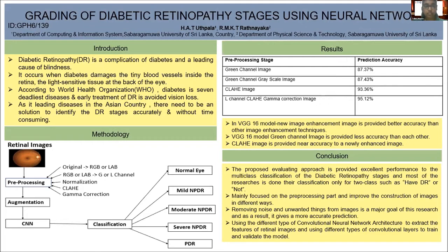Then a normalization process is applied to the images, followed by Contrast Limited Adaptive Histogram Equalization (CLAHE) to extract image features, and gamma correction to obtain tonal data from the original images. An augmentation process is also applied to get more details and produce clearer data for the convolutional neural network, which is used to minimize human effort in classifying the Diabetic Retinopathy stages.